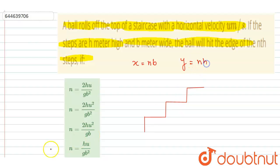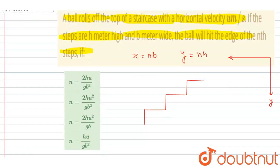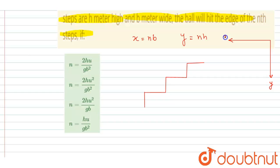be n times h. So if I draw the diagram it will be like this. Let's say this is the x-axis and this is the y-axis. So in y-axis the ball has to travel nh, and in x-axis is nb, right? So in x direction there is no acceleration, so we can write